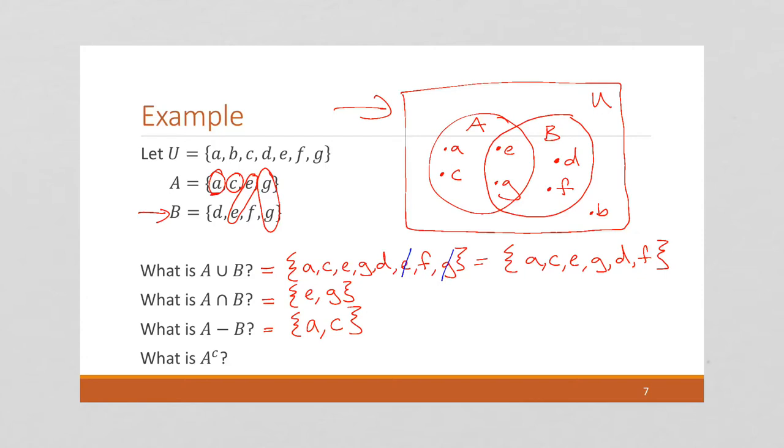And again, we could have just looked at our Venn diagram and seen that the only things that are in A but not in B are A and C.